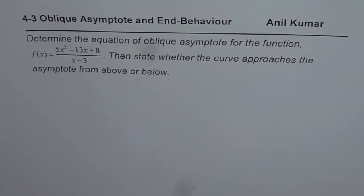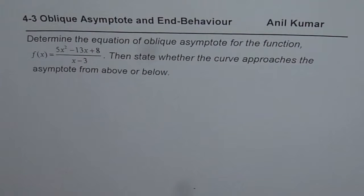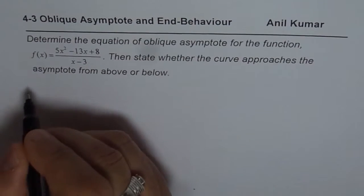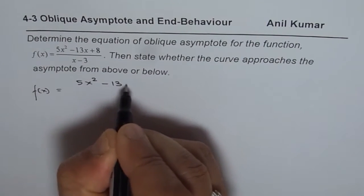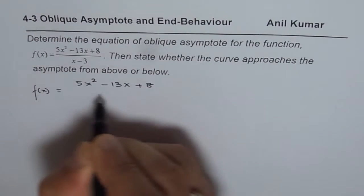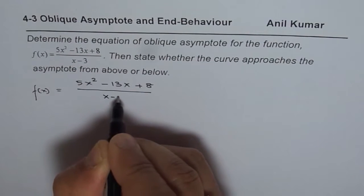I am Anil Kumar and in this video we will analyze oblique asymptote for the given function. The question is: determine the equation of oblique asymptote for the function f(x) equals 5x² minus 13x plus 8 divided by x minus 3.